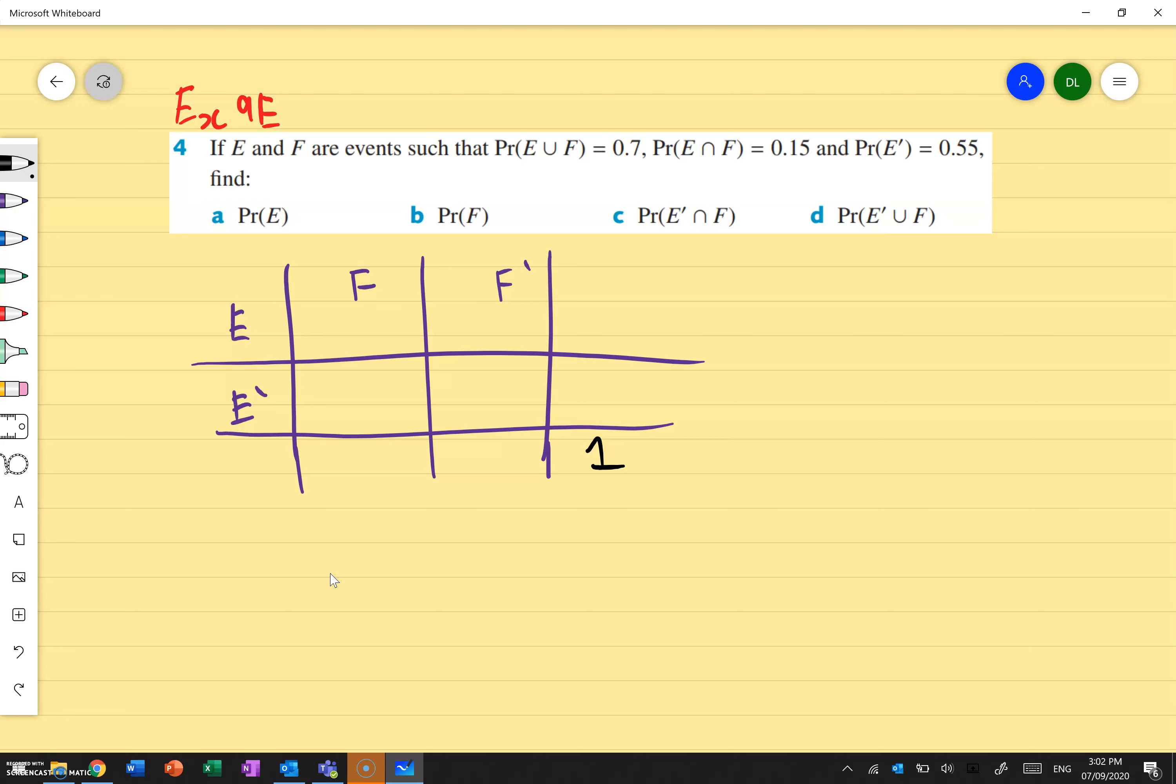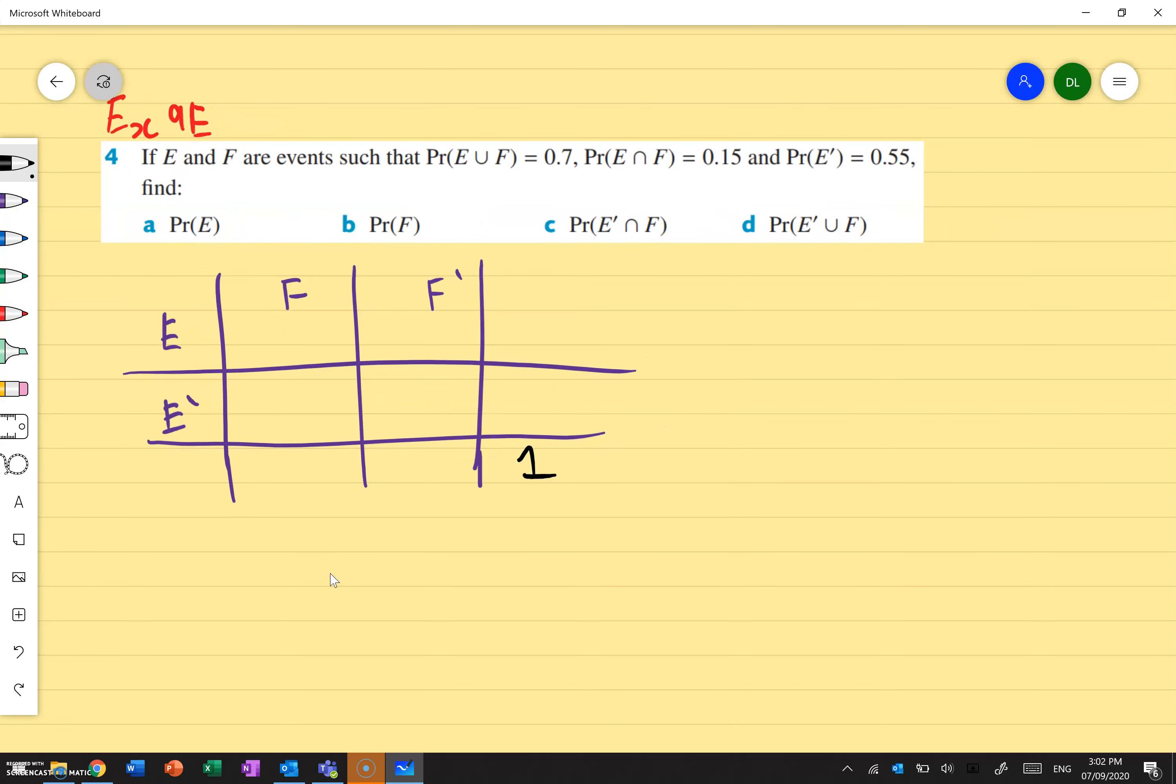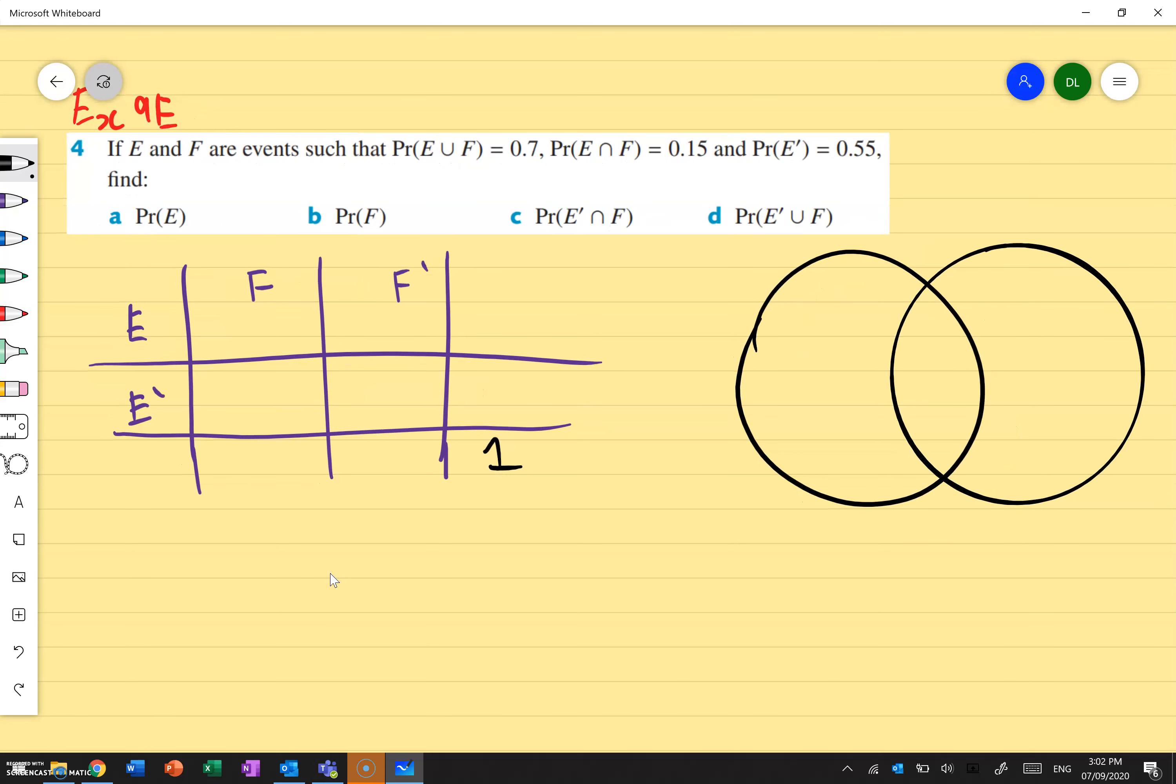So from there I can fill in the gaps. So it says the probability of E union F is 0.7. If I was to draw my Venn diagram here, I've got, let's say I've got, this is E and this is F. The probability of E union F, if I'm using this over here, let's color this in so I can represent it. E union F is everything over here. So that's everything on the inside. Everything on the inside gives me 0.7, just like the question says.